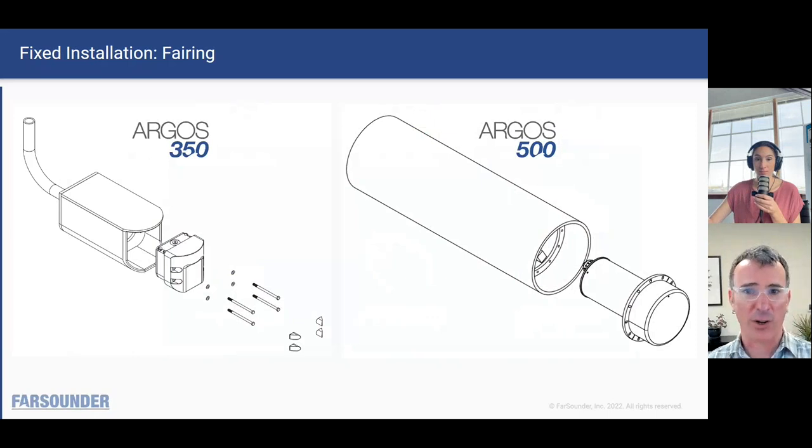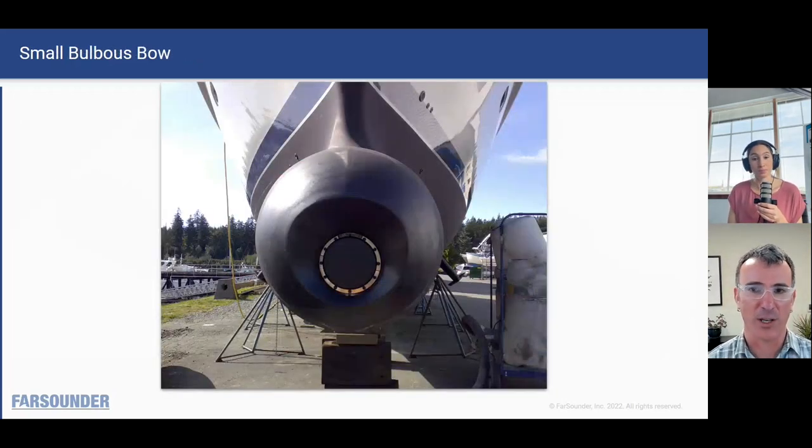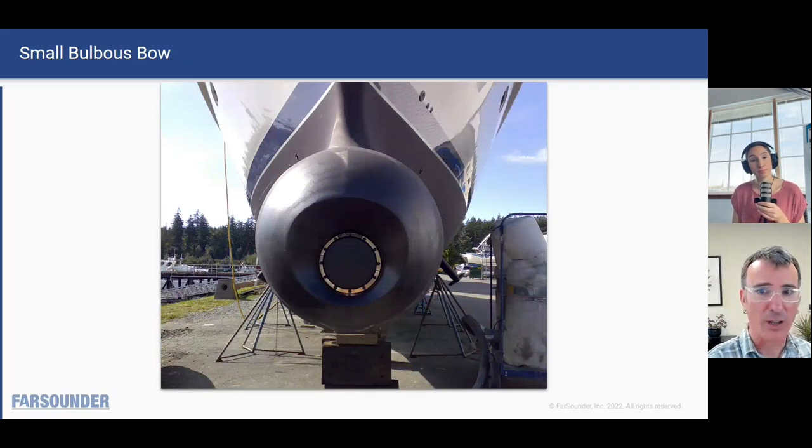To install the Argos 350 or any of our other models, it's the same general process. Basically a fairing is integrated to the hull, which is essentially a tube, and then the transducer goes into the front of that tube and is mounted to the vessel. We've been on vessels in the yachting community from 60-foot Nordhavens and up.